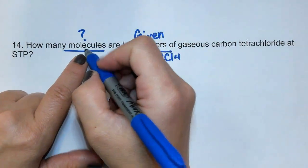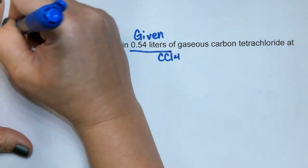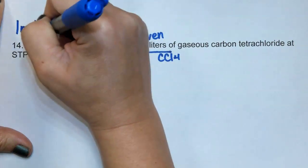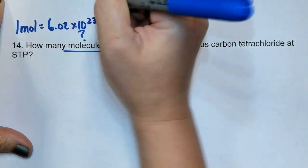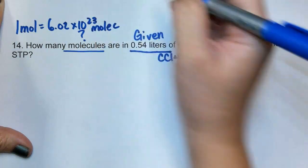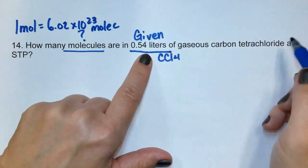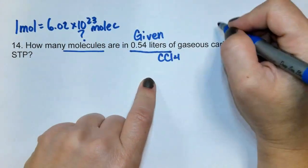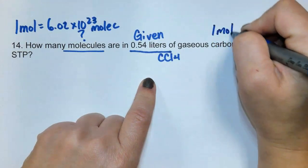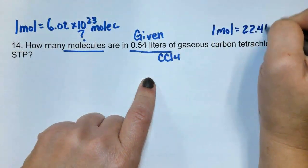Because I see molecules, I know that at some point I'm going to use 1 mole equals 6.02 times 10 to the 23rd molecules, and then because this is liters and it is at STP, I know that at some point I'll use 1 mole equals 22.4 liters.